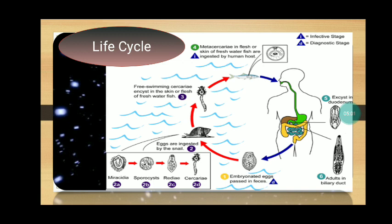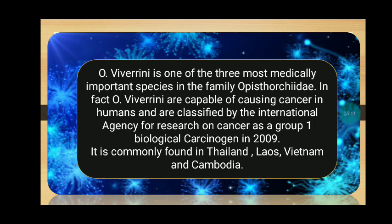The flukes reside in the biliary and pancreatic ducts of the mammalian host, where they attach to the mucosa. Opisthorchis viverrini is one of the three most medically important species in the family Opisthorchidae. It is capable of causing cancer in humans and was classified by the International Agency for Research on Cancer as a Group 1 biological carcinogen in 2009. It is commonly found in Thailand, Laos, Vietnam, and Cambodia.